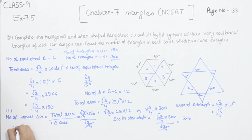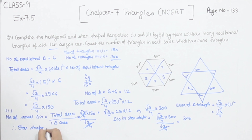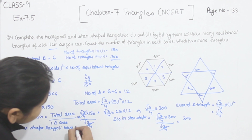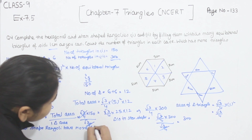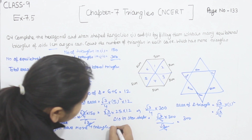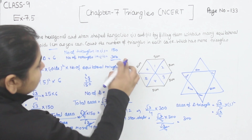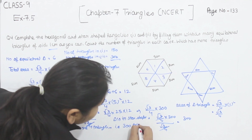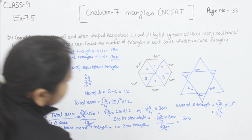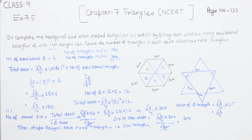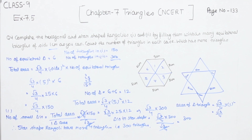So the star-shaped rangoli has more triangles — that is 300 triangles. With this we have completed question number 4 of exercise 7.5. In the next video we are going to start with the new chapter, chapter number 8: Quadrilaterals.